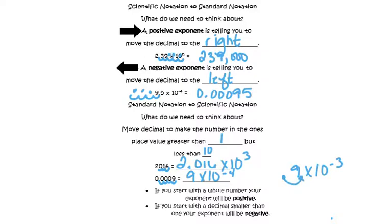So if you start with a whole number, your exponent will be positive. If you start with a decimal smaller than 1, your exponent will be negative.